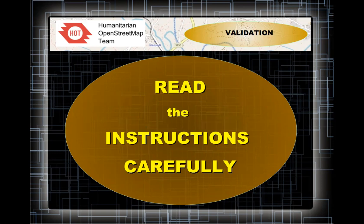The one thing you really need to do is read the instructions carefully, because that will explain why the mappers are mapping the way they are — whether they have the right idea and are mapping correctly to the instructions, or whether the instructions have been misleading and the mappers got the wrong idea. If the mappers have got the wrong idea, you need to contact the author of the project and ask them to change the instructions, or you're going to have a lot of validating and fixing up to do.